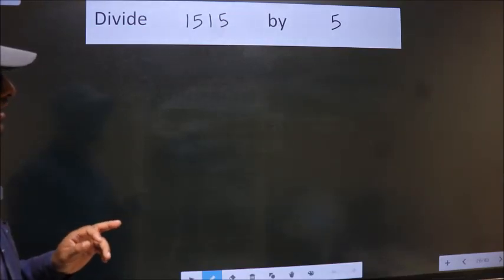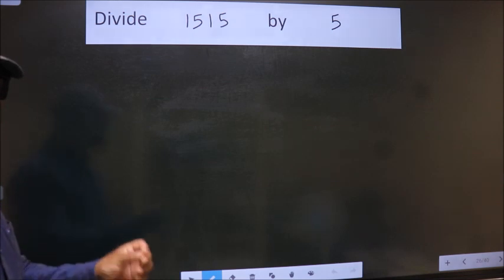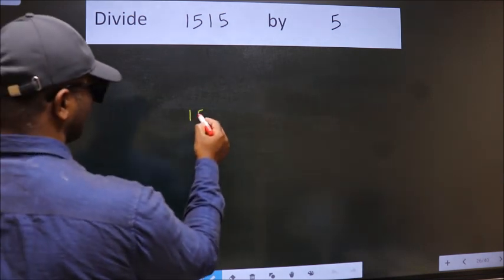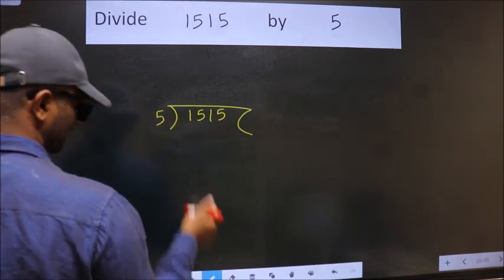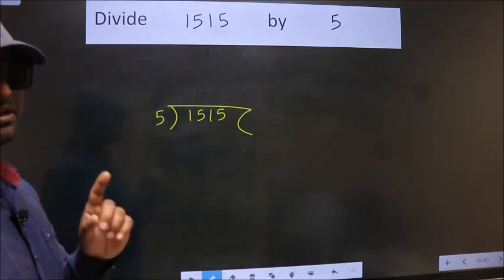Divide 1515 by 5. To do this division, we should frame it in this way. 1515 here, 5 here. This is your step 1.